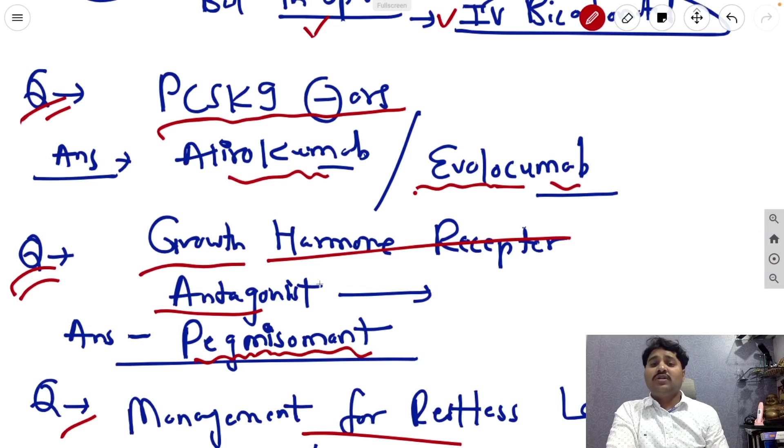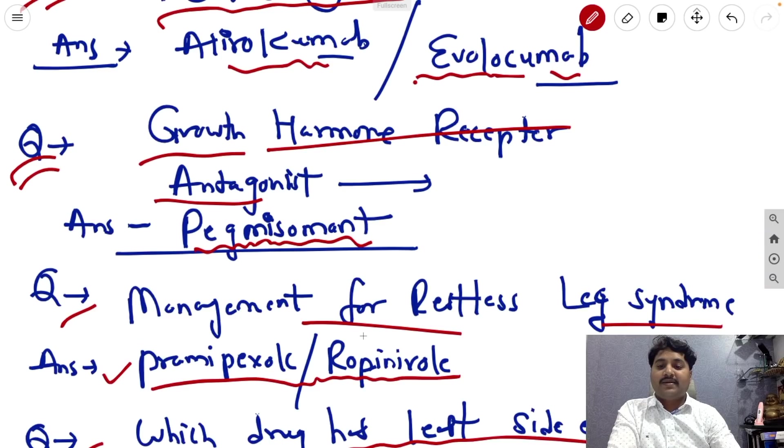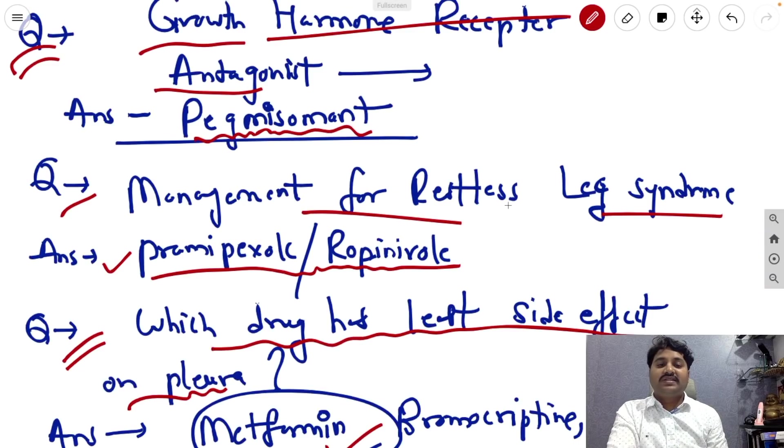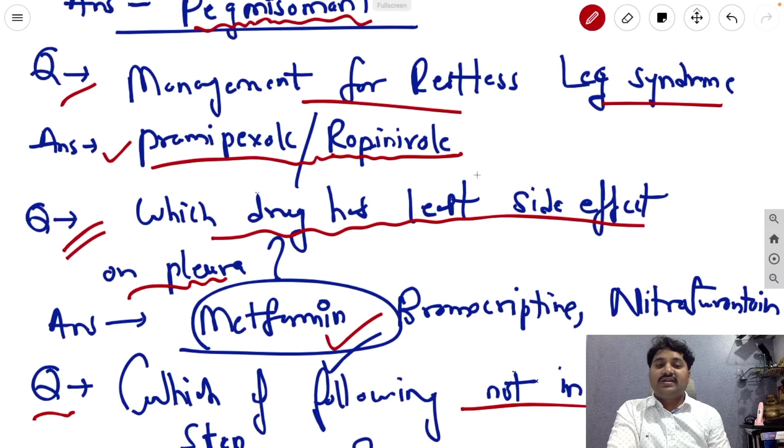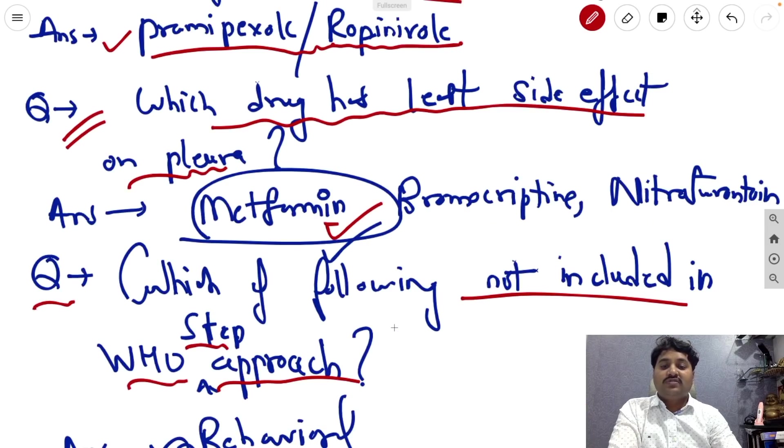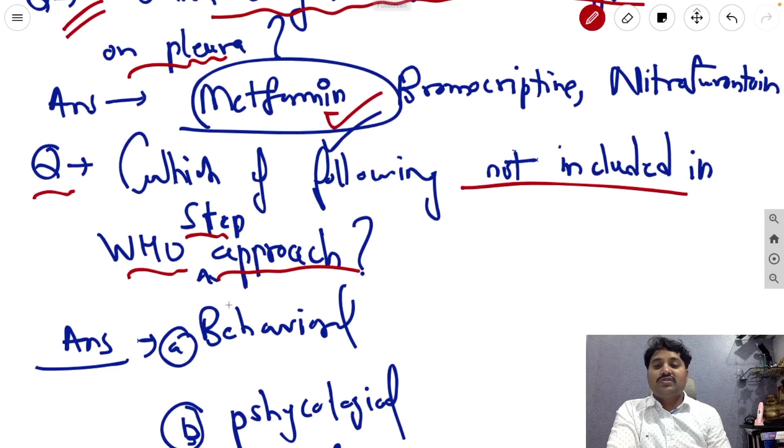Next question, PCSK9 inhibitors are alirocumab and evolocumab. Next question, growth hormone receptor antagonist is pegvisomant. Next question, management for restless leg syndrome is pramipexole and ropinirole. Next question, which drug has the least side effect on the pleura? Answer is metformin in the available options.